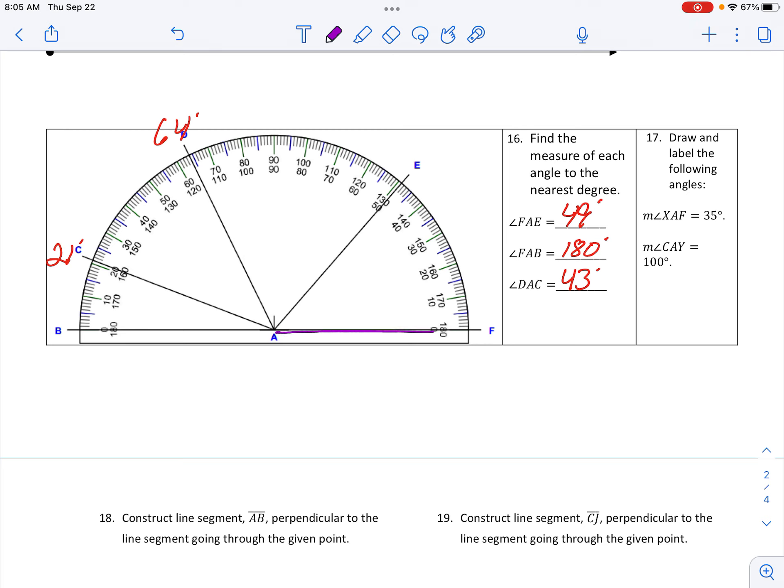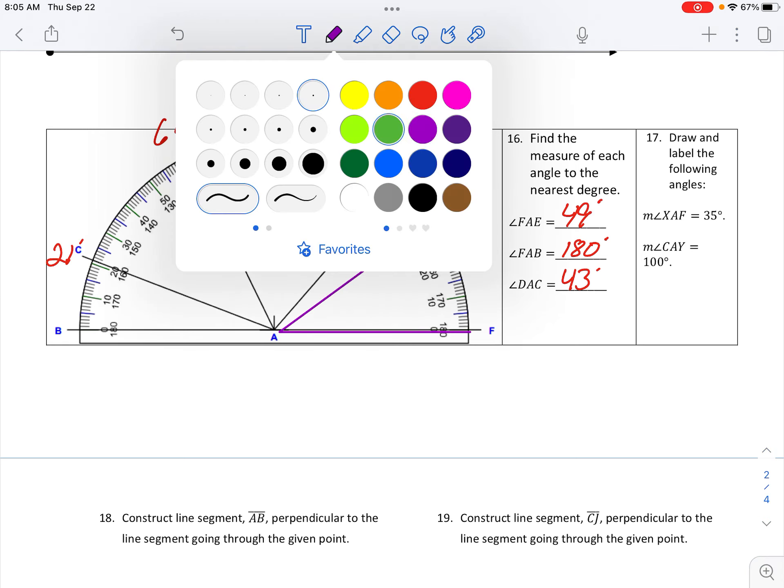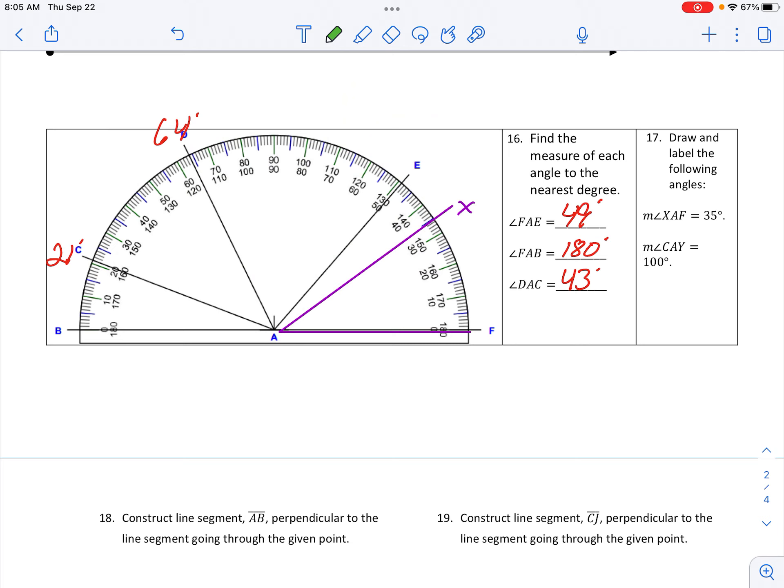And then for C-A-Y, let's go find C-A. Okay, now that needs to be 100. So C is going through 21 degrees. Y then needs to be going through plus 100 more, so 121.